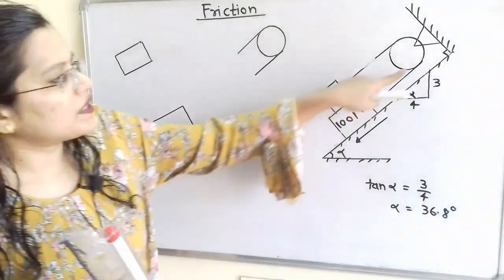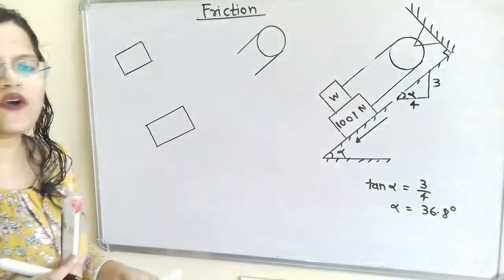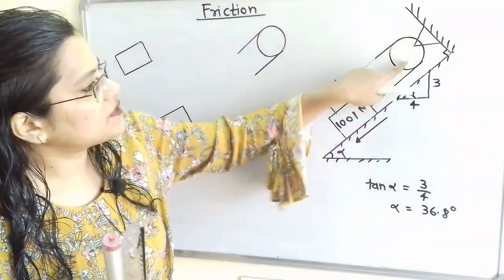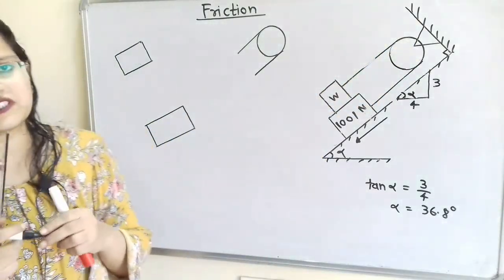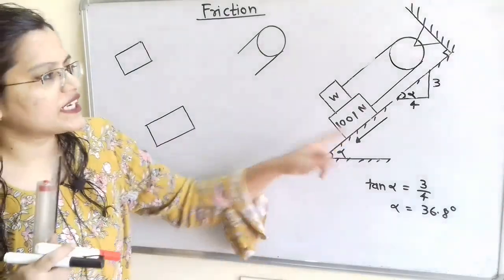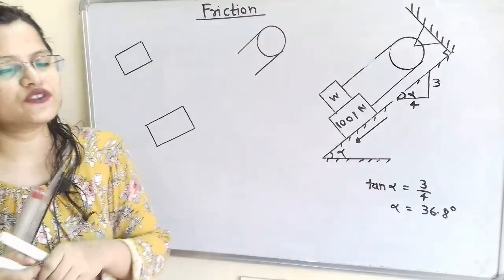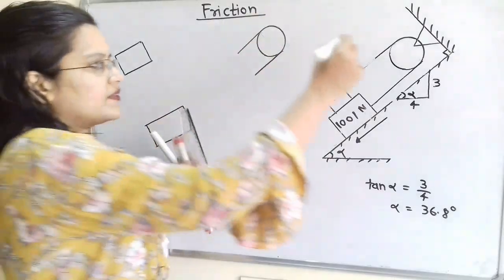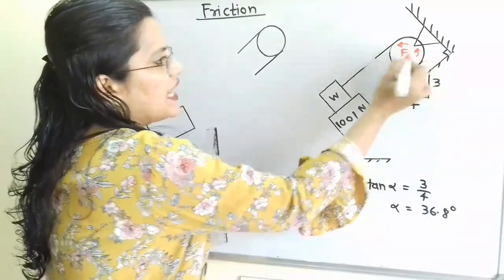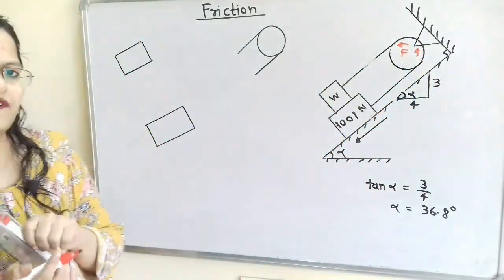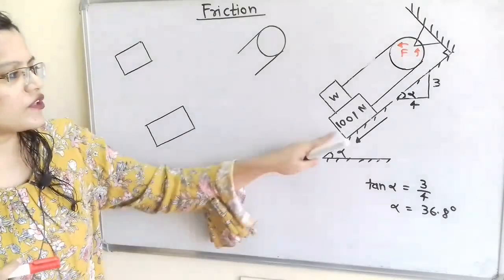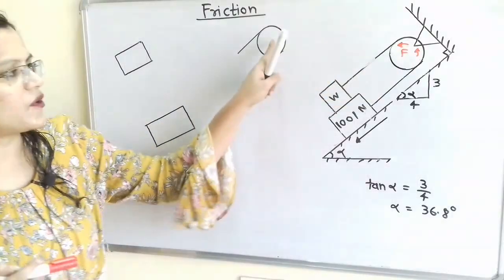The rope also has motion in the downward direction, and at the contact surface with the disk a frictional force is developed. This frictional force acts in the opposite direction of motion. We will now draw the free body diagram for the two blocks as well as for the disk.